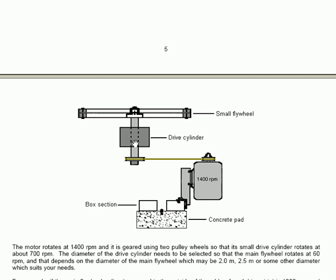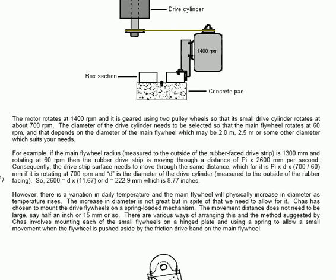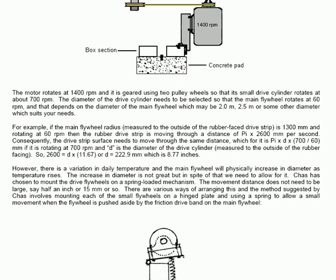The motor rotates at 1400 RPM and is geared down using two pulley wheels so that its small drive cylinder rotates at about 700 RPM. The diameter of the drive cylinder needs to be selected so that the main flywheel rotates at 60 RPM and that depends on the diameter of the main flywheel which may be two meters, two and a half meters, or some other diameter which suits your needs.